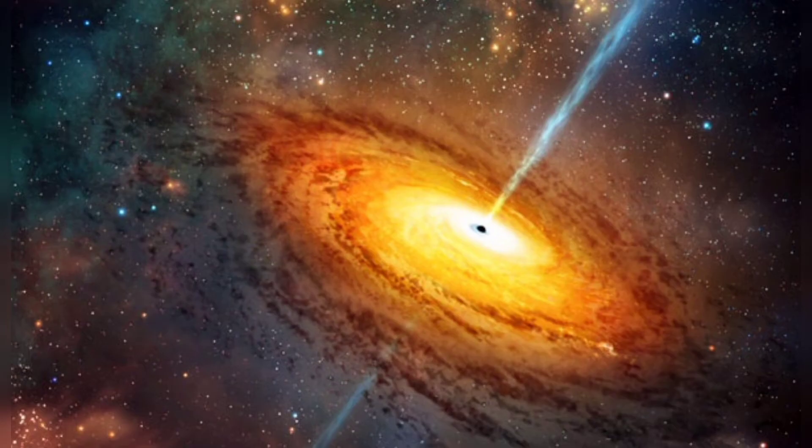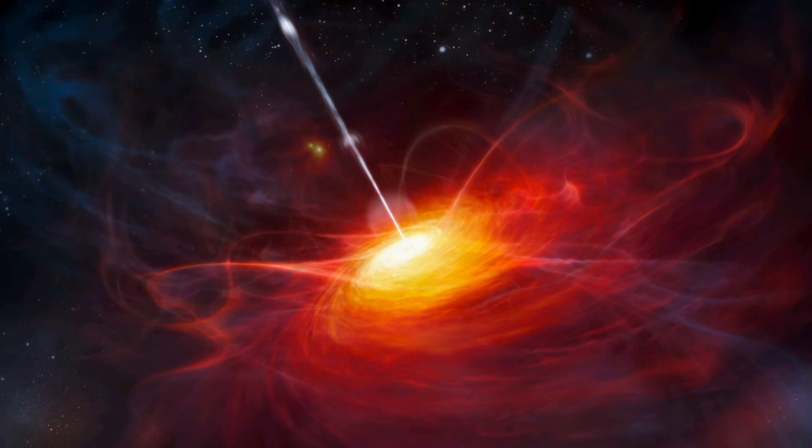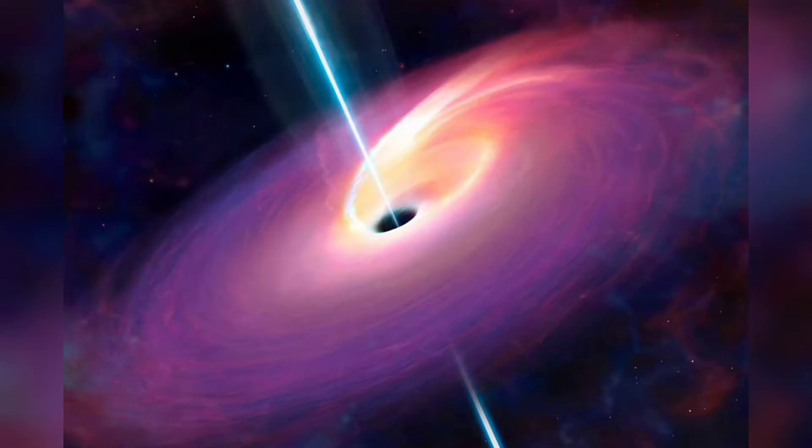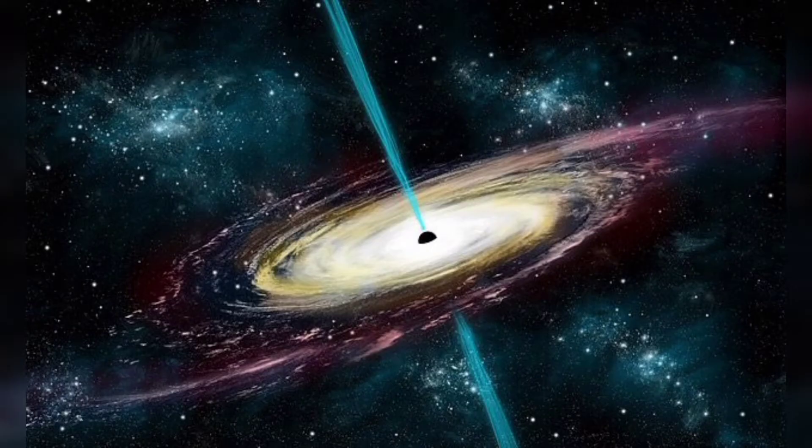Mass is the amount of matter or stuff in an object. The largest black holes are called supermassive. These black holes have masses that are more than one million suns together. Scientists have found proof that every large galaxy contains a supermassive black hole at its center.